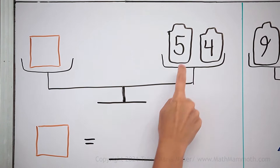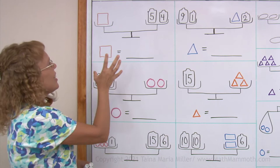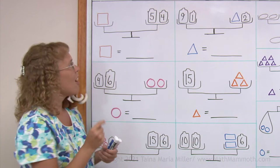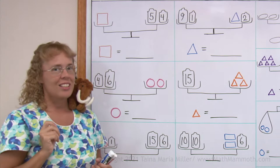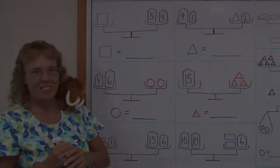It is like a seesaw. It can tilt one way or the other if one side is heavier, but in all these problems we are imagining that the two sides are equal. They have the same weight. And these pan balances or these scales are basically equations. They have unknowns. How much does it weigh? That is a task to solve in all these problems. They are like puzzles.